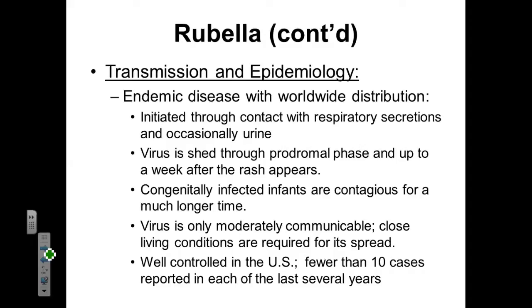Generally speaking, rubella is endemic worldwide — it's present in all major population centers. It's typically initiated when a patient comes in contact with a respiratory secretion from an infected individual. Occasionally urine is the vector that can transmit rubella. This virus is shed throughout the prodromal phase and up to one week after the rash appears. Rubella is very well controlled within the United States, with fewer than ten confirmed cases in each of the last several years.